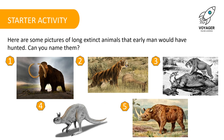Let's begin our lesson with a starter activity. Here are some pictures of long extinct animals that early man would have hunted. Can you name them? Pause the video now and write down numbers 1 to 5 in your notebook and see if you can name the long extinct animal that you can see in each of these five drawings. Pause the video while you complete this activity and when you're ready to check the answers, restart the video.